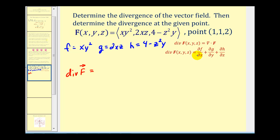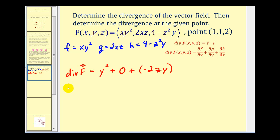To determine the divergence of F, we find the partial derivative of f with respect to x, which is y squared, plus the partial derivative of g with respect to y — since x and z are constant, that is zero — plus the partial derivative of h with respect to z, which gives us negative 2zy. Simplified, the divergence equals y squared minus 2zy.